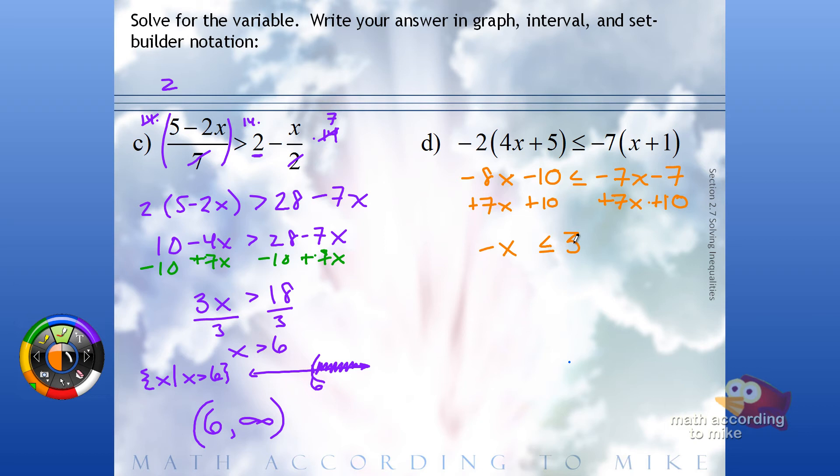Since that is a negative 1 there times the x, we need to multiply or divide, your choice, both sides by negative 1 because we want positive 1x, not negative 1x. Well, by doing that to the negative, I'm sorry, dividing by negative, we have to...